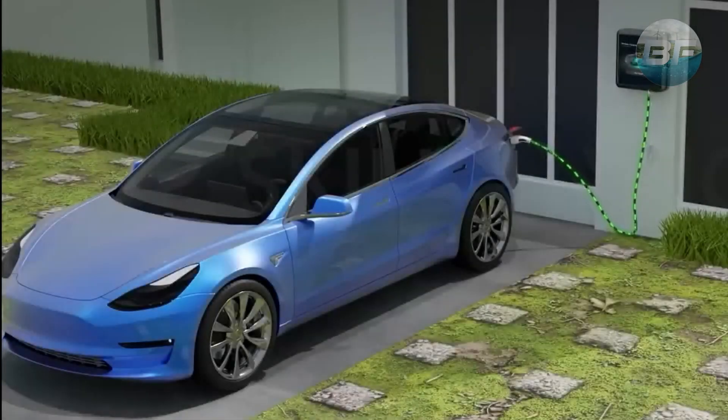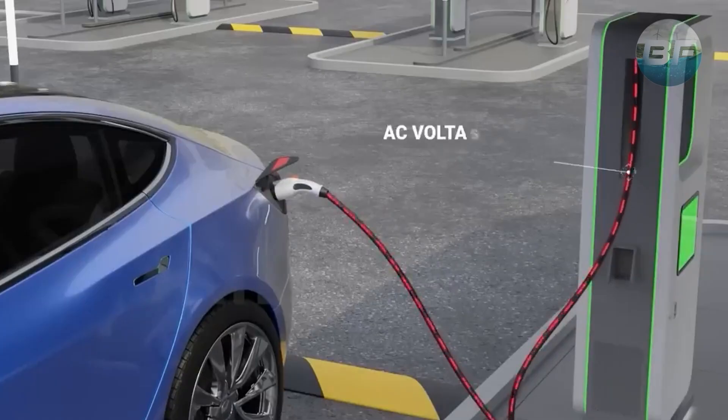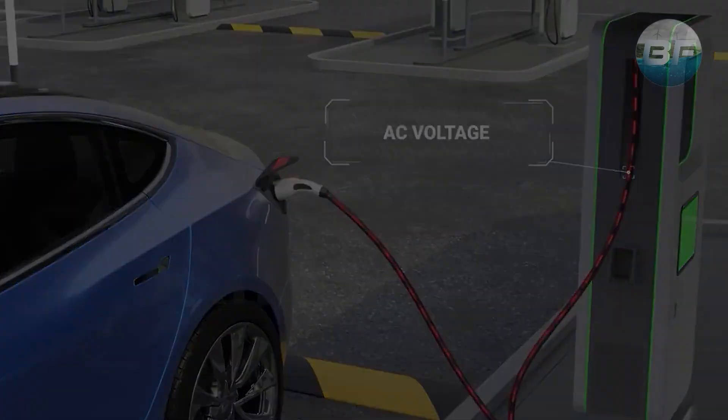Level 1 chargers are the slowest, as they plug into a standard 120-volt outlet and take around 8 to 12 hours to charge a fully depleted battery. Level 2 chargers use a 240-volt power supply and can charge a battery in around 4 to 6 hours.